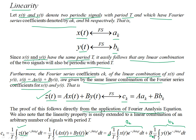Therefore, if you make a linear combination of two periodic signals x(t) and y(t) scaled by constants A and B, the Fourier series coefficients of the resulting signal are also the same linear combination of their respective Fourier series coefficients — C_k = A·a_k + B·b_k — scaled by the same scalars A and B. This follows just from the definition of the Fourier series analysis equation.